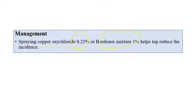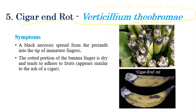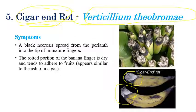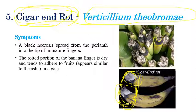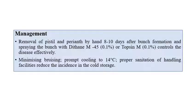The next disease is cigar end rot, caused by Verticillium theobromae. The end of the fruits rots and looks like a cigar end — that is why it is named cigar end rot, resembling the ash at the end of a cigarette. Black necrosis along with white powdery or ashy masses can be seen. Black necrosis can be seen in the perianth region, and banana fingers especially on the lower regions are affected.